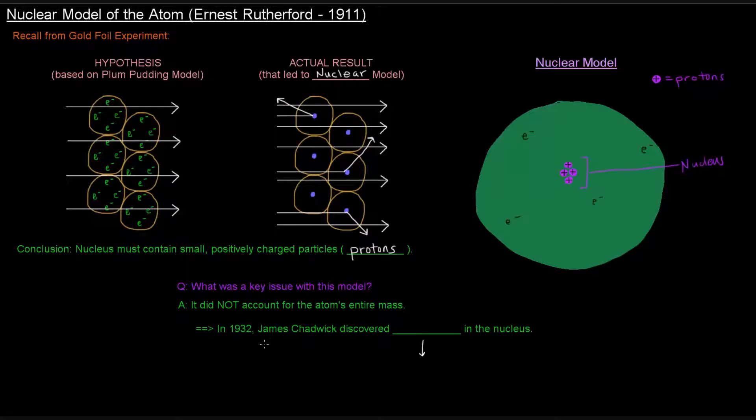So later in 1932, James Chadwick discovered neutrons in the nucleus.